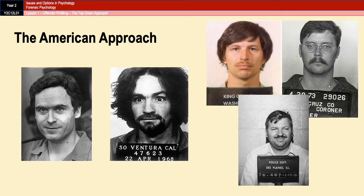This approach came from a series of interviews carried out by the FBI in the 1970s with 36 sexually motivated killers, 25 of which were serial killers. Examples of sexually motivated serial killers include Ted Bundy, Charles Manson, John Wayne Gacy, Ed Kemper, and the Green River Killer.